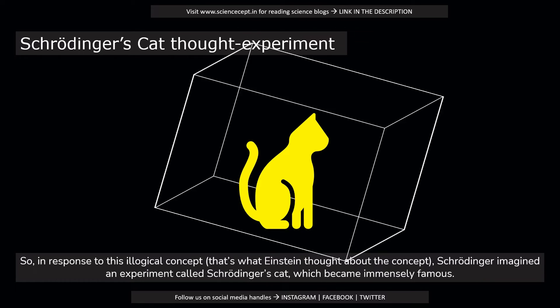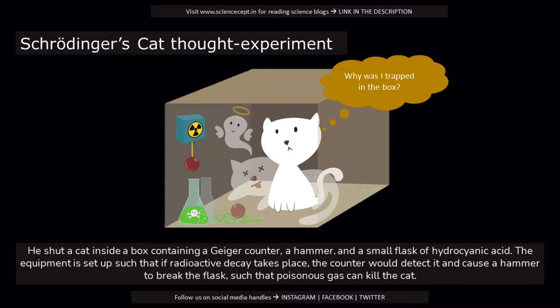Schrödinger's Cat became immensely famous. He placed a cat inside a box containing a Geiger counter, a hammer, and a small flask of hydrocyanic acid. The equipment is set up such that if radioactive decay takes place, the counter would detect it and cause a hammer to break the flask, such that poisonous gas would kill the cat.